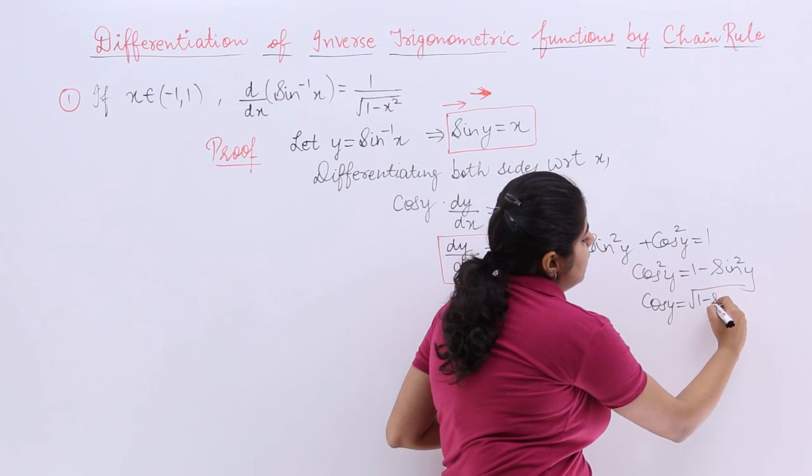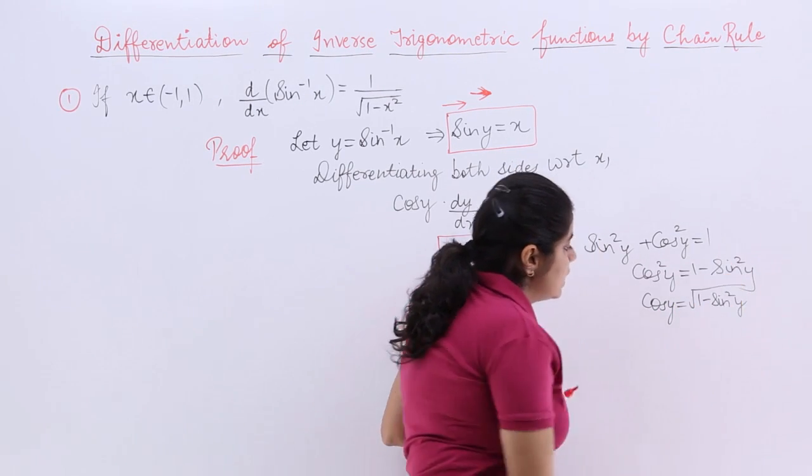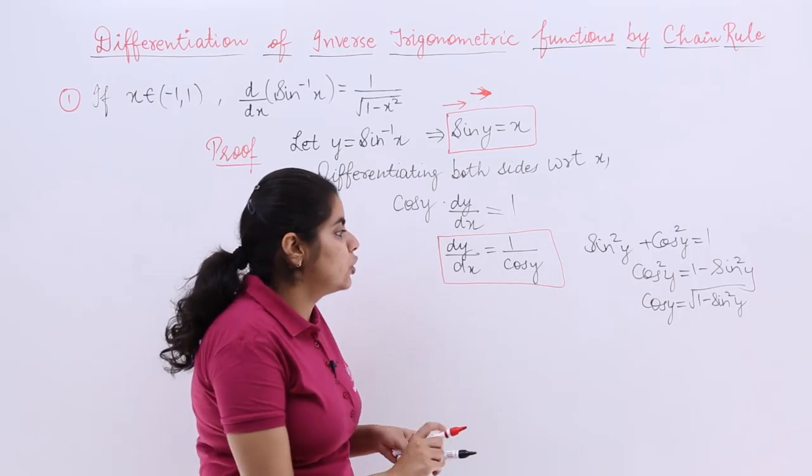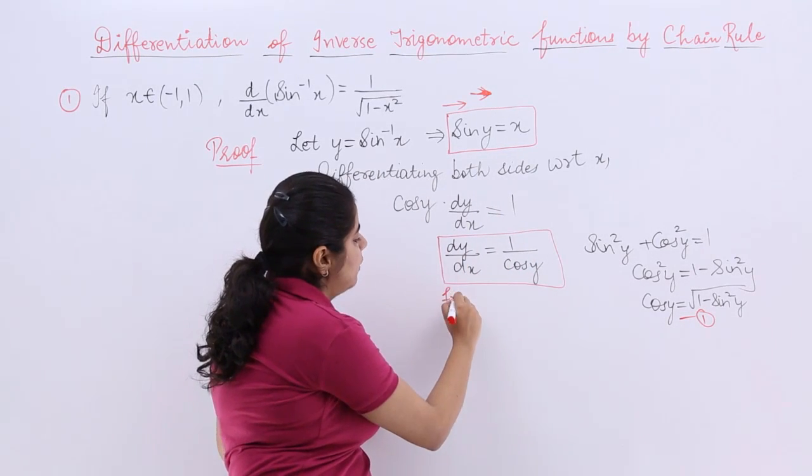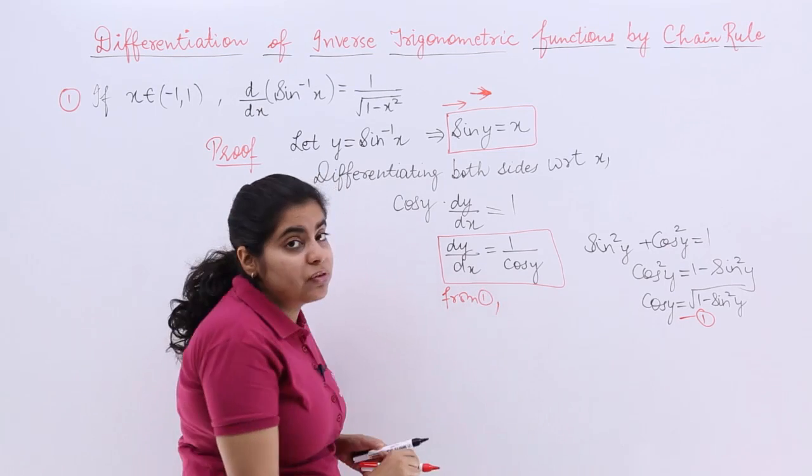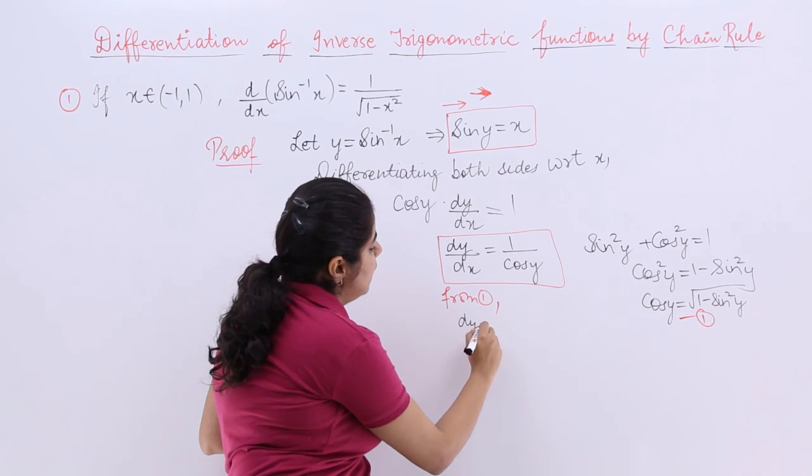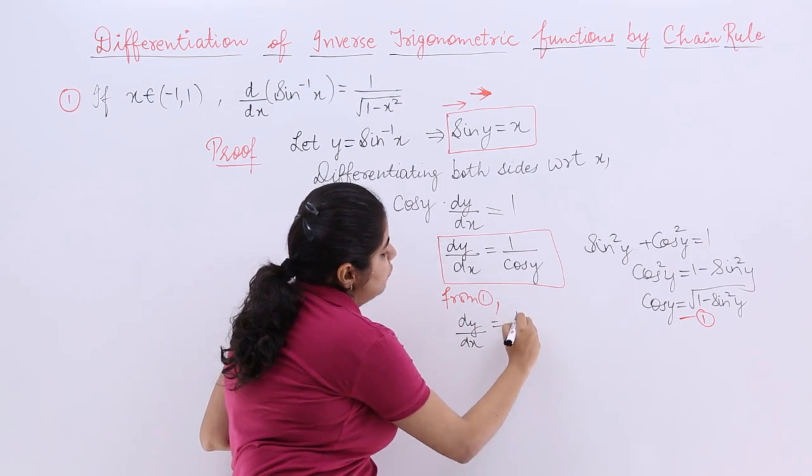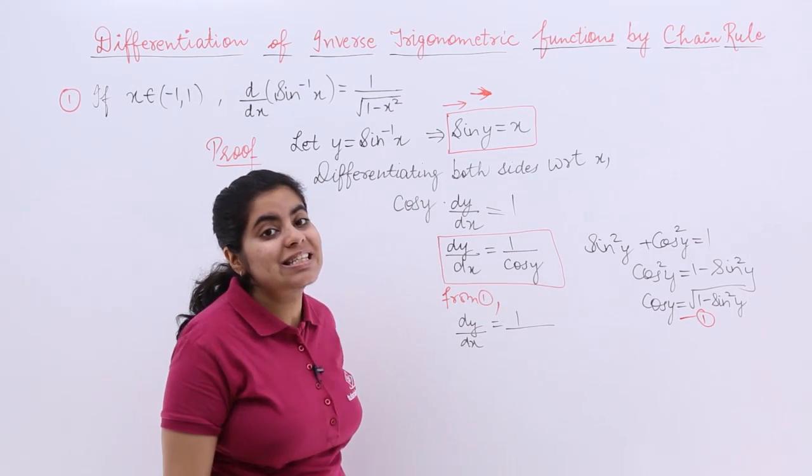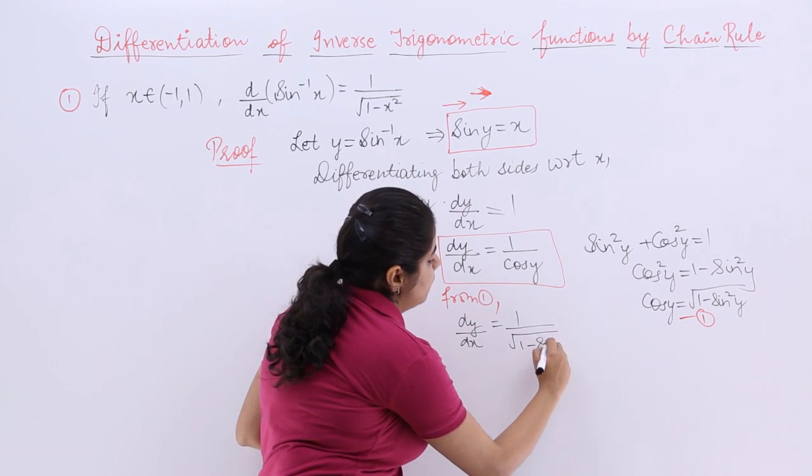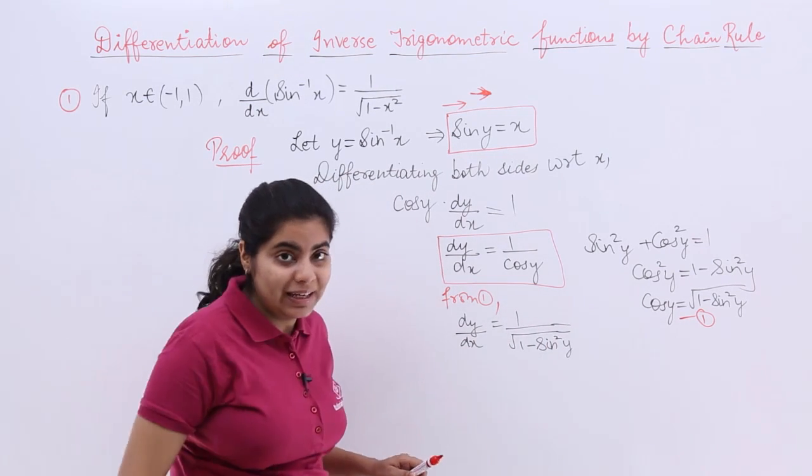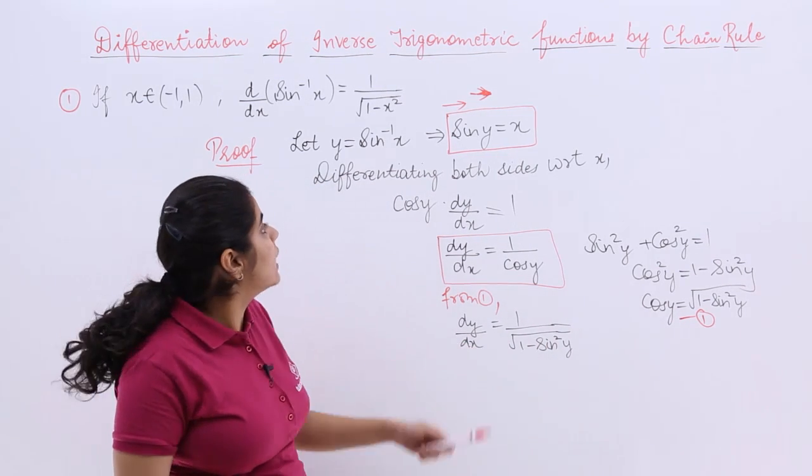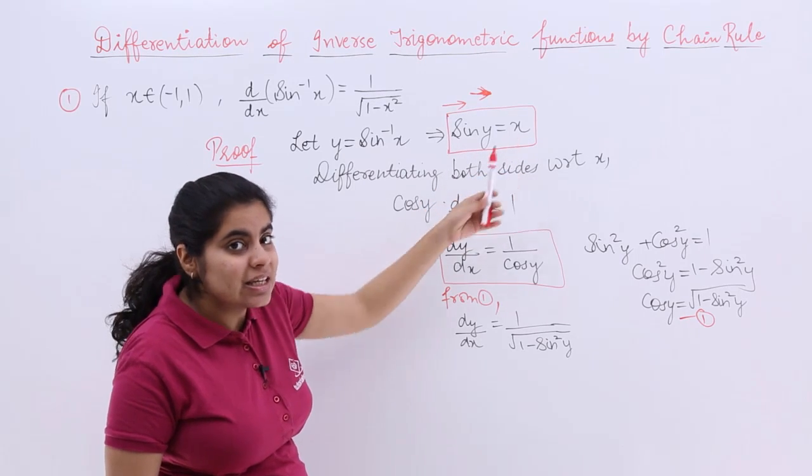This will be using, let's name this equation 1 and say that from equation 1, what is the value of dy by dx? It is 1 upon under root 1-sin square y. Now most of you must have arrived at the answer by now. What is sin y? Sin y is nothing but x.